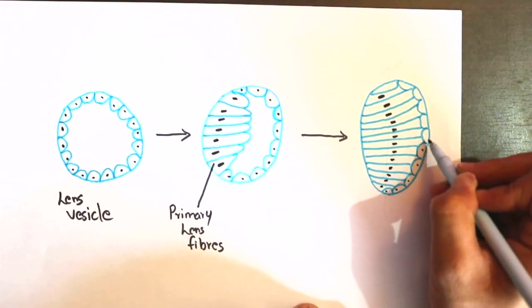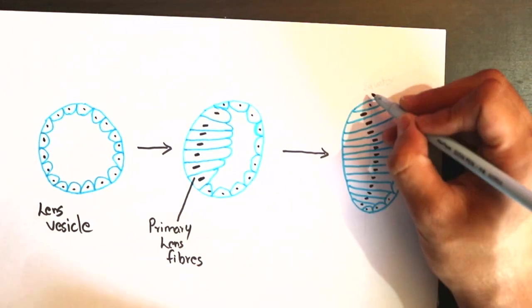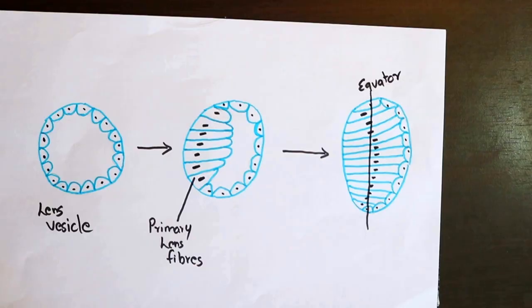Cells present on the equatorial region of the lens form secondary lens fibers. These fibers elongate and cover the primary lens fibers. The lens continues to grow after birth, with new secondary fibers being added as outer layers.